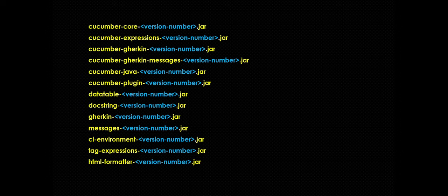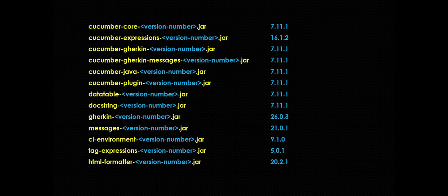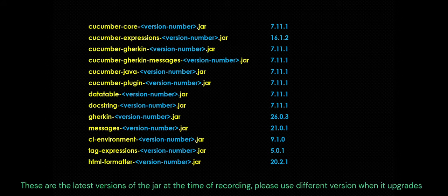The list of jars we are going to download from the Maven Central repository will be used to write a very simple feature file and run it. Some of you might be wondering why I have not included the Cucumber JUnit jar in this list. The reason is that the Cucumber JUnit jar adds additional runner capability that we don't need for this simple example. In future videos I will explain how the Cucumber JUnit jar or the Cucumber test engine jars add the runner capabilities. Please note the version numbers required for these jars — I will put the full list with version numbers in the description section.